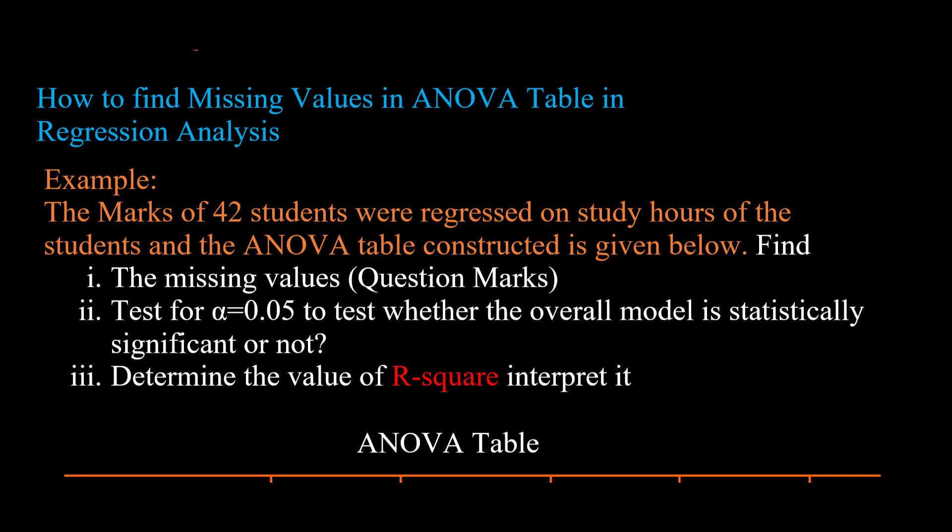In this video lecture, we are going to discuss the ANOVA table and missing values in an ANOVA table. ANOVA stands for analysis of variance. It can be used to test the equality of several population means, and in regression analysis to test whether the overall model is statistically significant. This video covers how to find missing values in an ANOVA table when doing regression analysis.